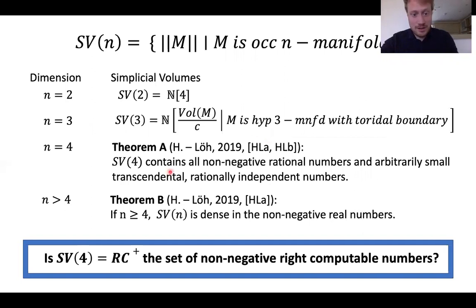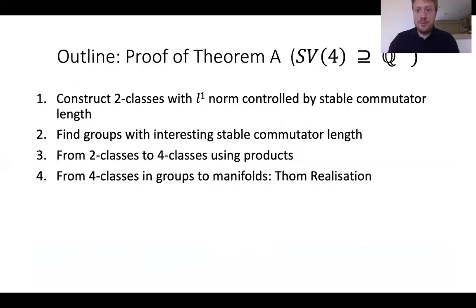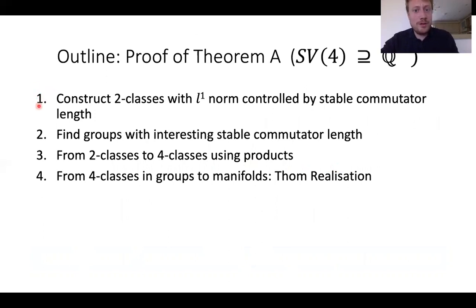In Theorem A, I claimed that every non-negative rational number can be written as the simplicial volume of a four-manifold. Now I will prove this result using an invariant called stable commutator length, and then give an outlook on future projects involving right-computable numbers.